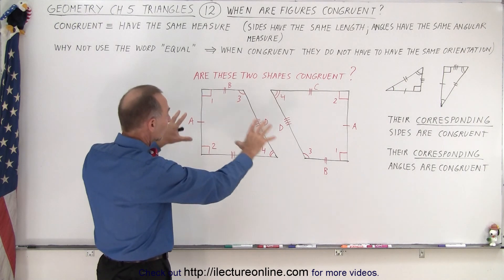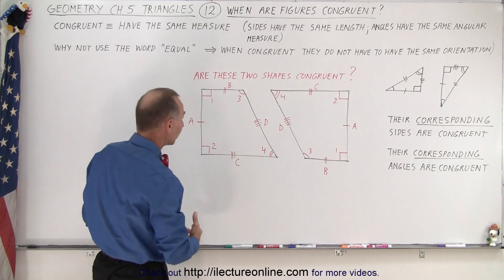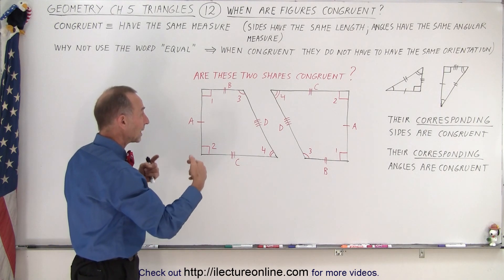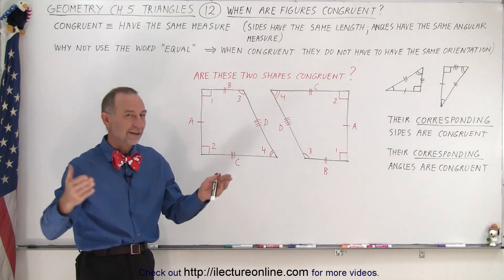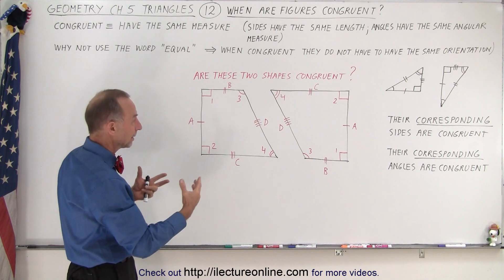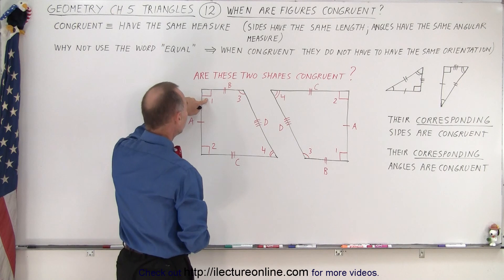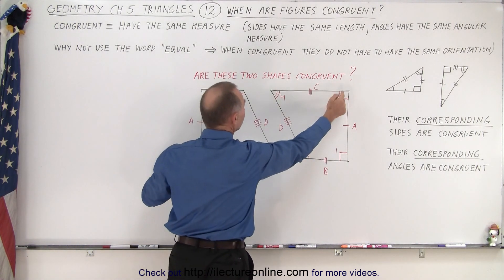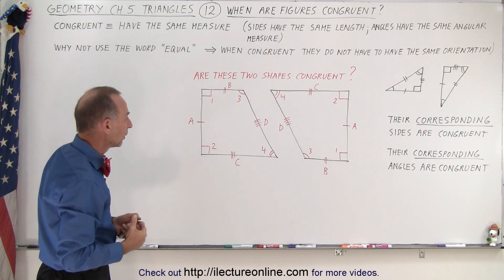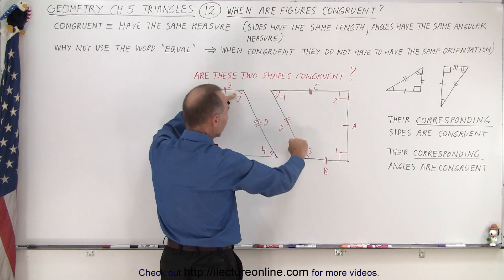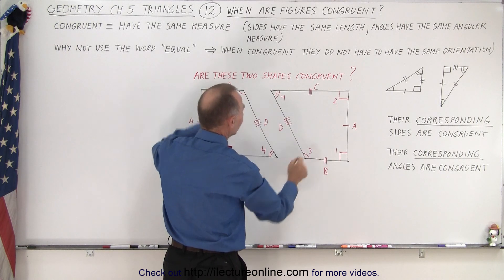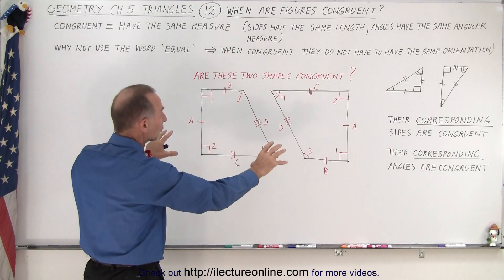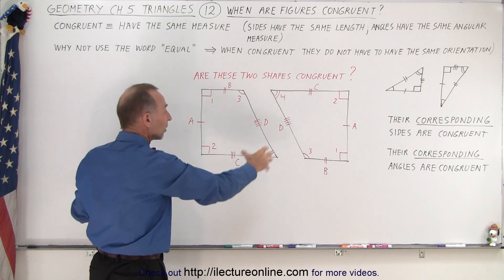Now we take a look at two figures that are not triangles — they both have four angles and four sides. To tell that these two shapes are congruent, we need to find their corresponding sides and corresponding angles. If the corresponding sides have the same length and the corresponding angles have the same angular measure, then these two figures must be congruent. Here we have angle 1 in both figures — both are 90-degree angles. Angle 2 in both figures — also right angles. Angle 3 has the same curved line marking, indicating the same angular measure. Angle 4 with two lines also indicates the same angular measure. All angles have corresponding angles from one figure to the next with the same measure.